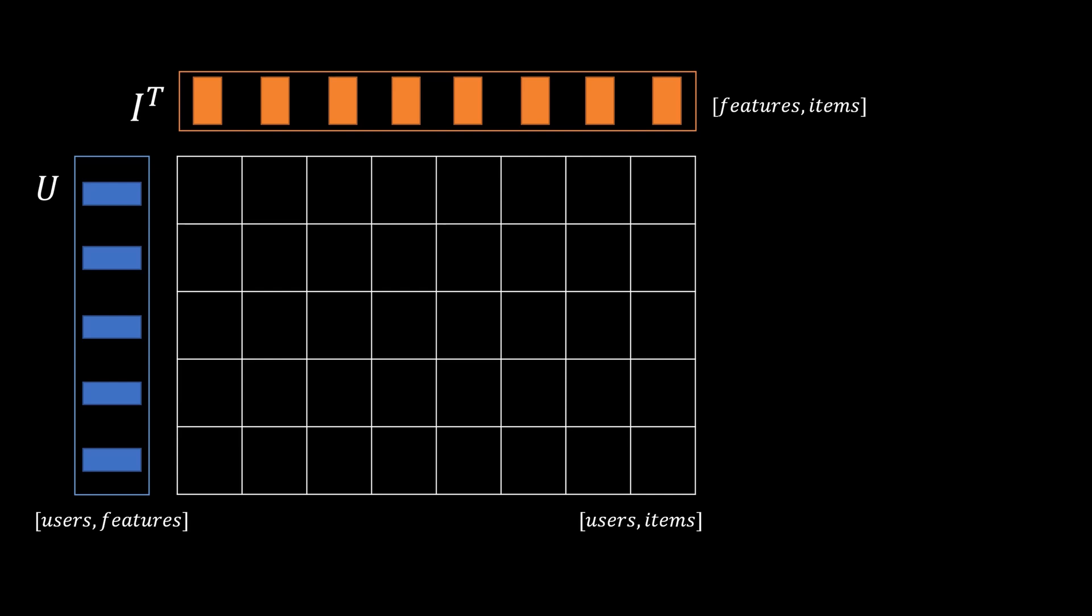Formally this predicted rating matrix can be expressed like this. This means we are decomposing the matrix R into the product of two lower rank matrices.